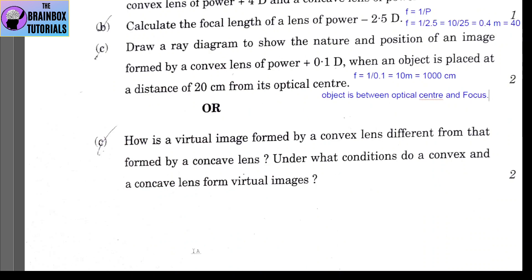How is the virtual image formed by a convex lens different from that formed by a concave lens? The virtual image from a concave lens is always smaller than the object (magnification less than 1), whereas the virtual image from a convex lens is always magnified. For a convex lens, the object must be between the optical center and focus to form a virtual image. For a concave lens, any object placed in front of it will always form a virtual image.